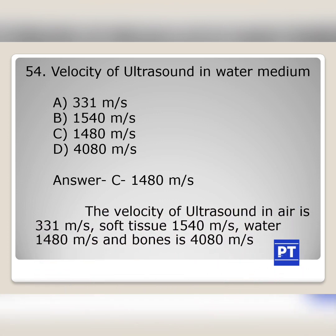The velocity of ultrasound in air is 331 m/s, in soft tissue it is 1540 m/s, in water it is 1480 m/s, and in bone it is 4080 meters per second.